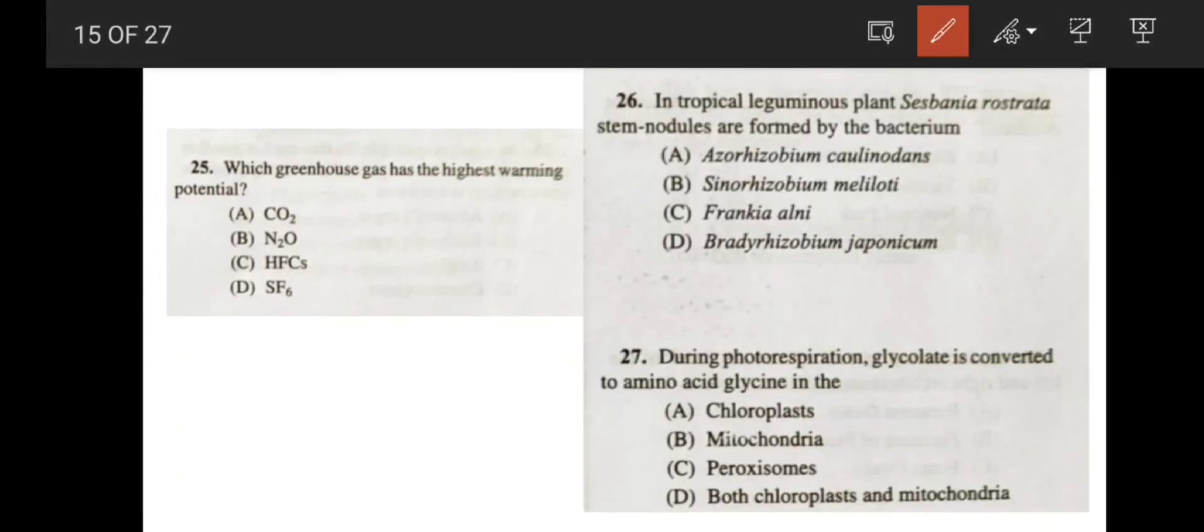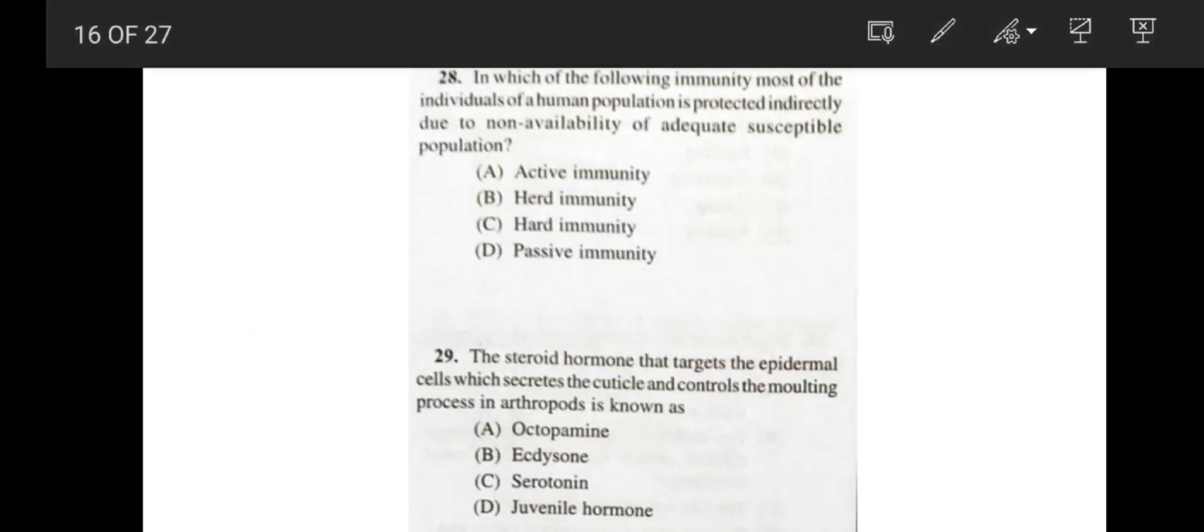Coming to the question number 25. Which greenhouse gas has the highest warming potential? Very, very important question. The answer will be SF6. It has the highest warming potential. Very important one. Next, in tropical leguminous plants, Sesbania rostrata, stem nodules are formed by the bacterium Azorhizobium caulinodans. So correct answer is option A, Azorhizobium. Next, during photorespiration, glycolate is converted to glycine in which part of the cell? In the peroxisome. So correct answer is option C.